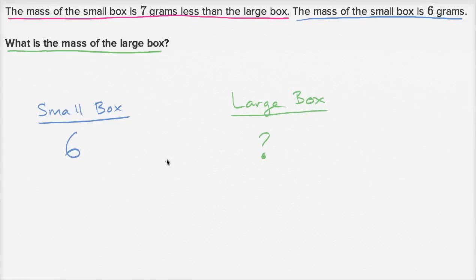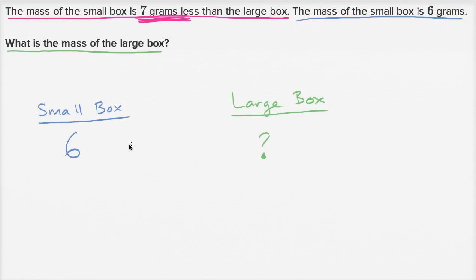Like we did in the last problem, is the large box going to have a larger mass or a smaller mass? We shouldn't just look at the names of the boxes — we should look at what they tell us. They tell us the mass of the small box is seven grams less than the large box, so the small box is seven grams less — which means the large box is seven grams more than the small box. So: six grams plus seven grams more equals the mass of the large box.